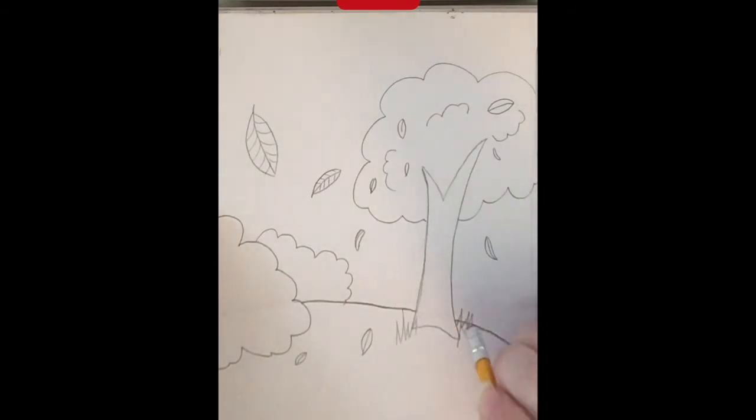So I'm going to erase this area a little bit, and I'm going to add that grass there, so the grass will look like it's behind the tree and also some in front of the tree like that.